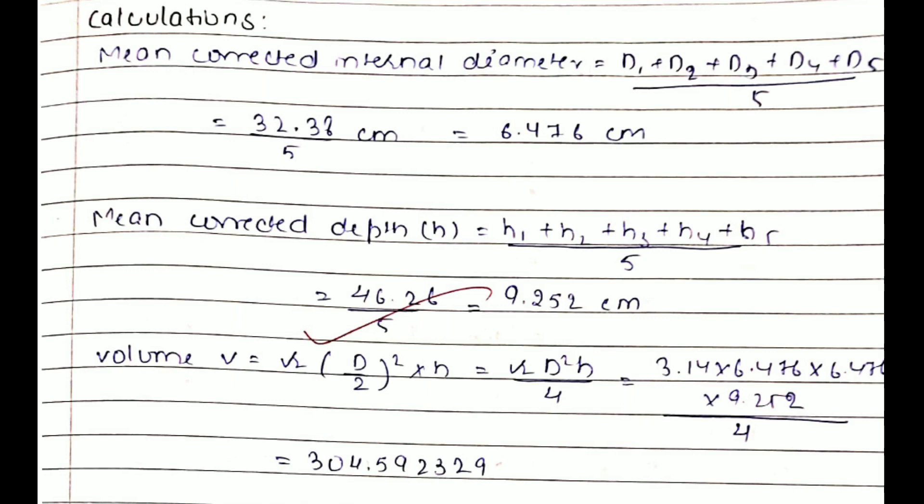After obtaining the diameters and heights, you can also say the depths. Then I have calculated the mean corrected internal diameter that almost equals to 6.476 centimeter, and then there's calculation for the corrected height that is 9.252 centimeter. Both the procedures for the calculation of diameter and height are the same.